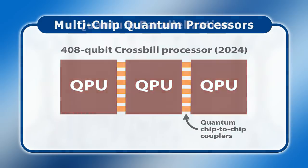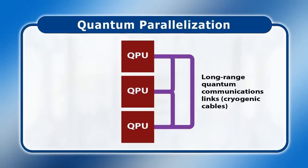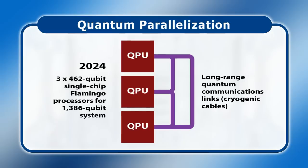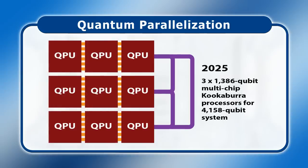Finally, the longer-term goal is quantum parallelization, where individual quantum processors will be linked together with quantum rather than classical communications links. Initially in 2024, IBM plans to connect three 462-qubit single-chip processors called Flamingo to create a 1,386-qubit system. And then in 2025, the intention is to quantum-link three 1,386-qubit multi-chip processors called Kookaburra, which should result in a 4,158-qubit quantum computer, although potentially more processors could be included.